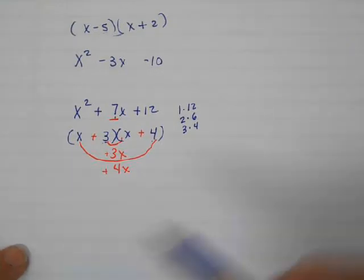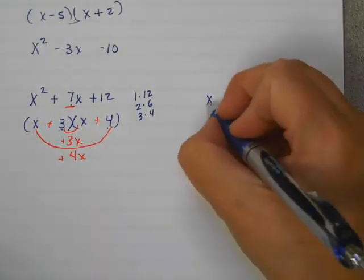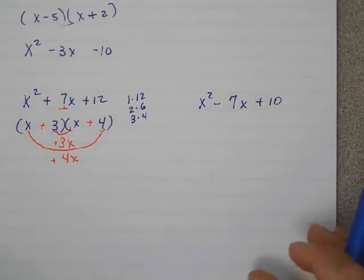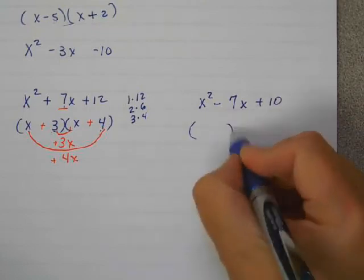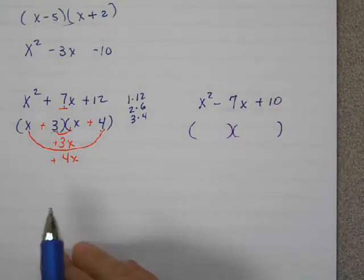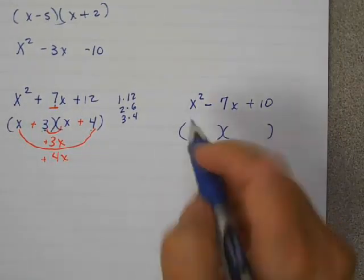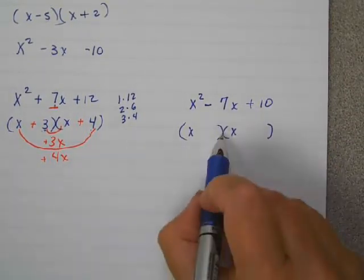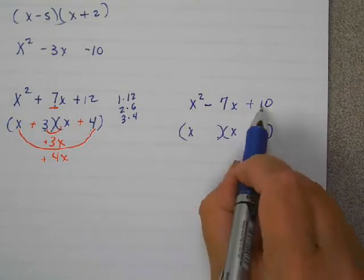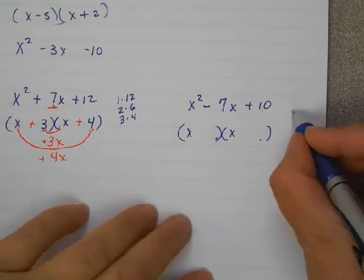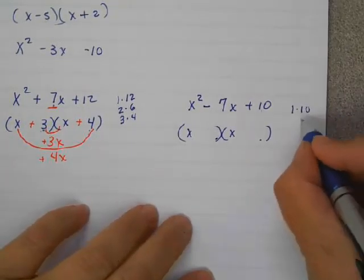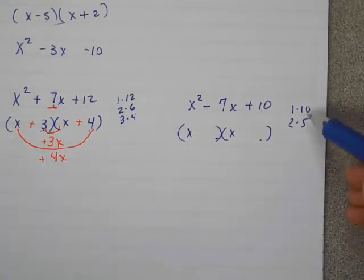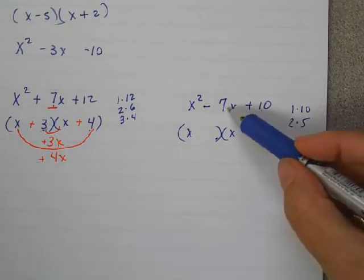Let's do another one. Let's do x squared minus 7x plus 10. So I know that this is going to be two binomials multiplied together. The first two terms are going to be x and x, because that's what gives me x squared. I know the two numbers that I put here have to multiply to give me 10. So I'm going to write out the factors of 10. It could be 1 times 10 or 2 times 5. Then I'm going to pick the combination that could give me a 7 in the middle.